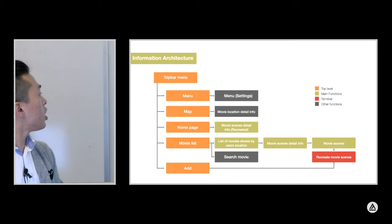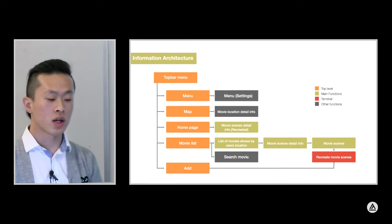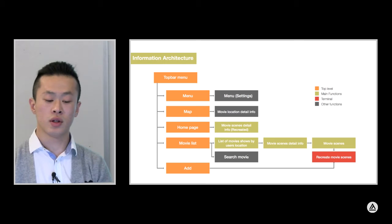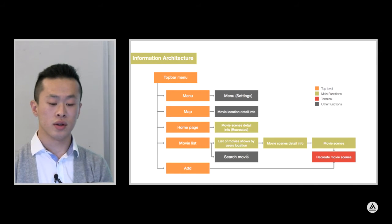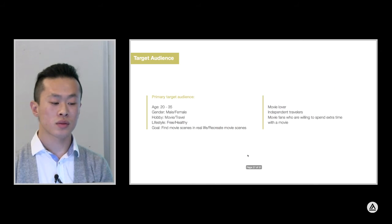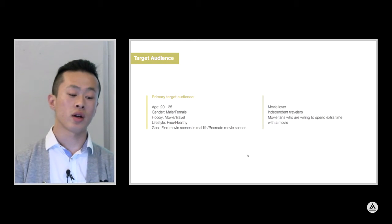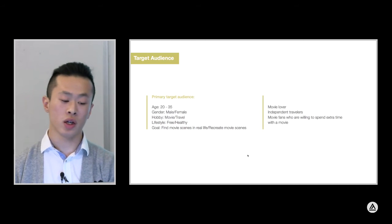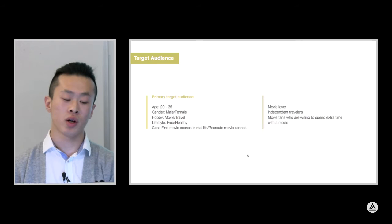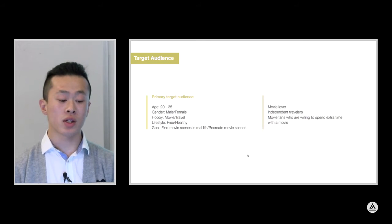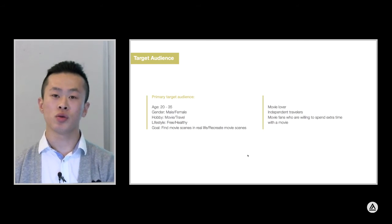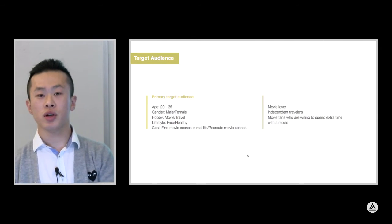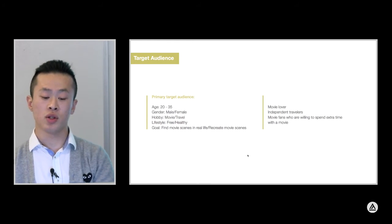Now you're seeing my information architecture. I use different colors to show the different levels. Now let's talk about the target audience. My primary target audience will be aged between 20 to 35, both male and female — primarily people who are movie lovers and also independent travelers.